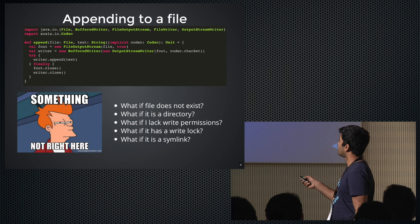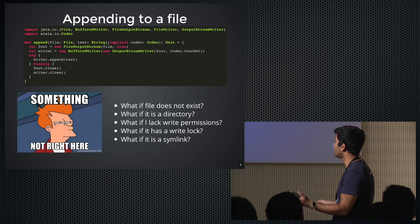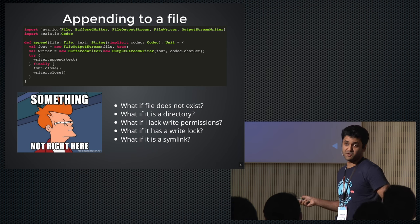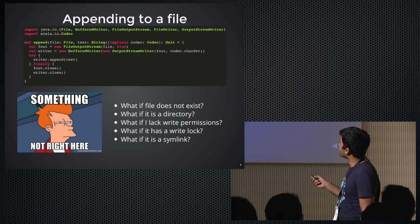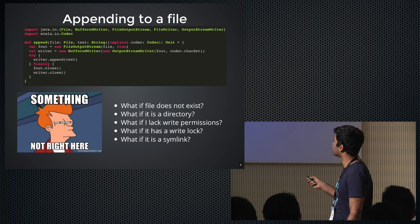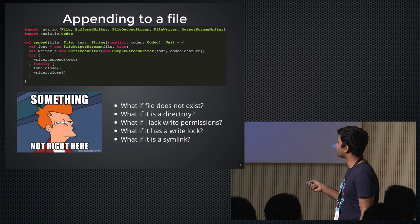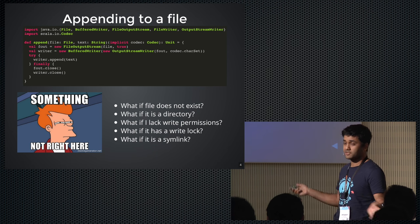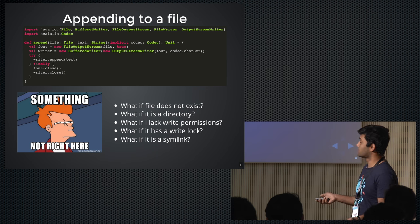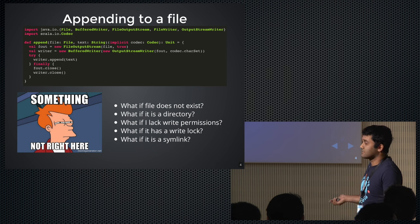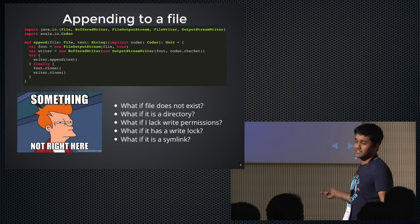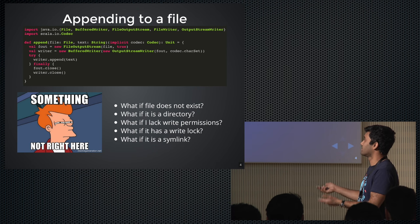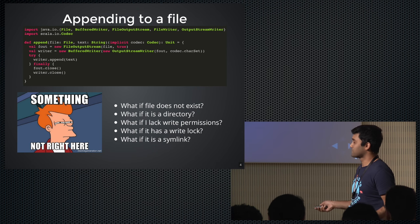Let's look at something really simple: you want to append a string to a file. Using no external library, you create a FileOutputStream — and in Java you can't name parameters, so I don't know what that 'true' does. You create a BufferedWriter, pass in an OutputStreamWriter from the FileOutputStream, append the text, and close all of these. This is the simplest code I could write to append text to a file — six lines of code. You probably got it from Stack Overflow anyway.